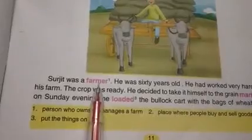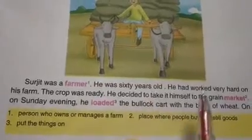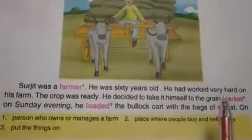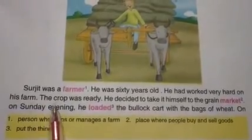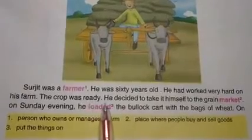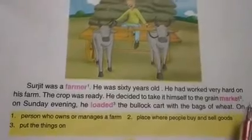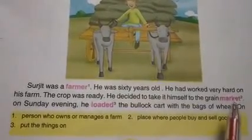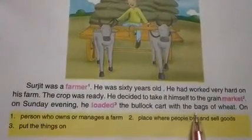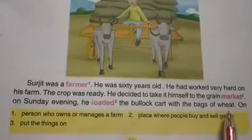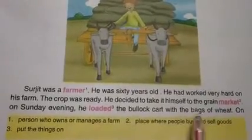Sujit was a farmer — Sujit ki saan si. He was 60 years old — Uw sat saal da si. He had worked very hard on his farm. The crop was ready — Fasal tiyaar si. He decided to take it himself to the grain market. On Sunday evening, he loaded the bullock cart with the bags of wheat — Aeth vah shaman usne gadde de utte kanak de thaylee ladde le.